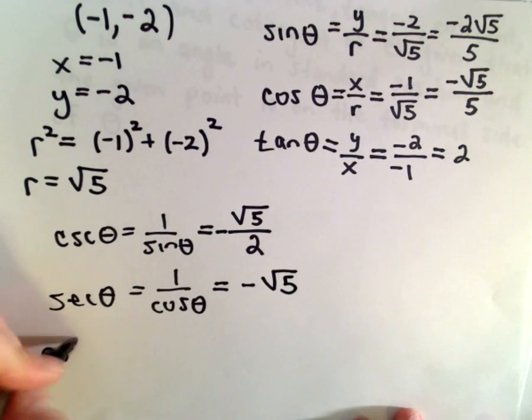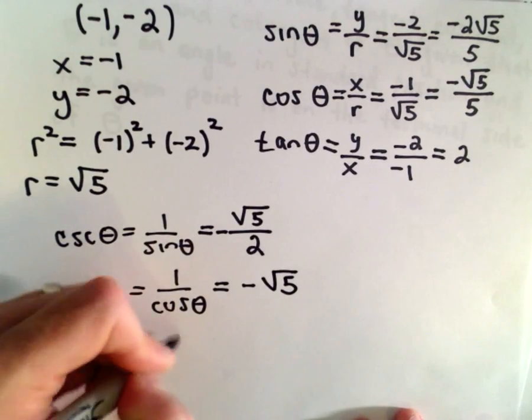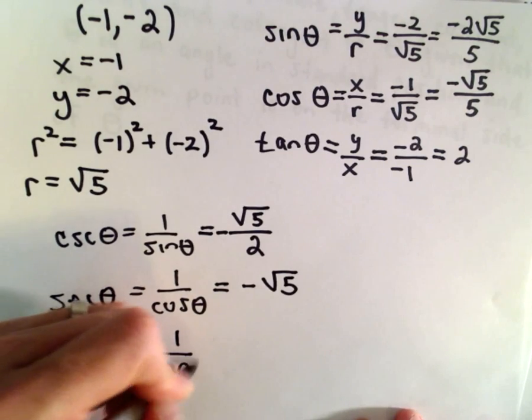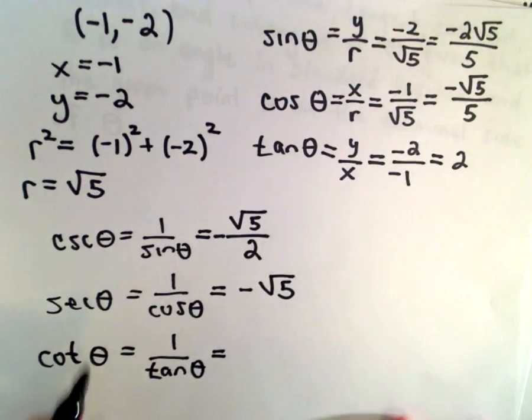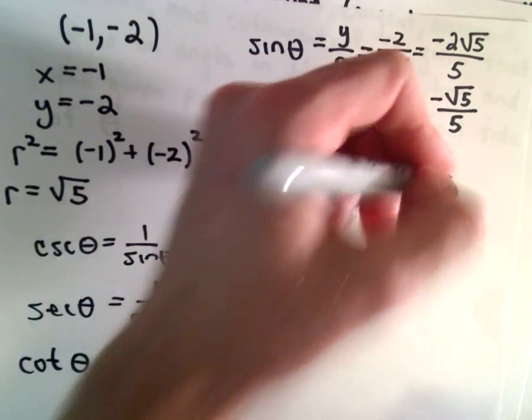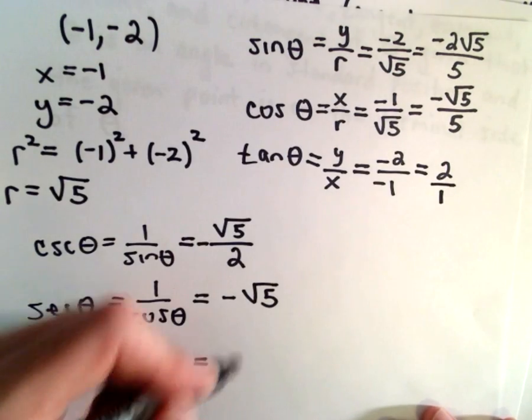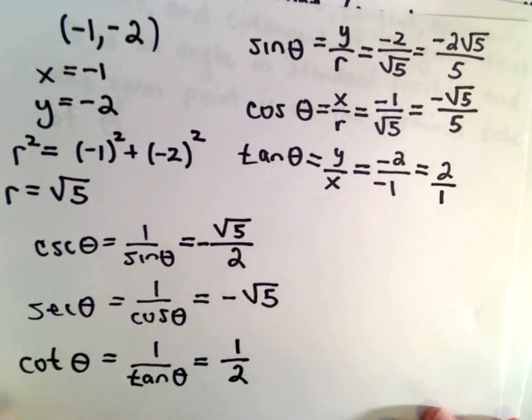And last but not least cotangent of theta. That's 1 over tangent of theta. Well we had a positive 2 or 2 over 1. If we take the reciprocal of that we'll simply get 1 half.